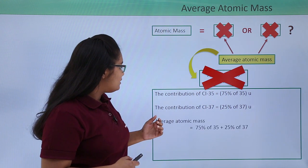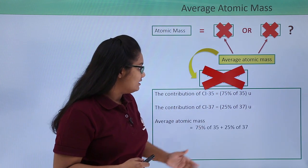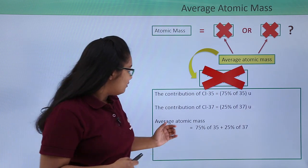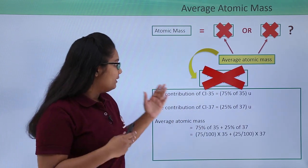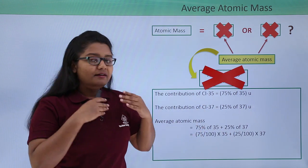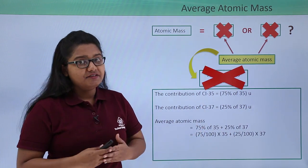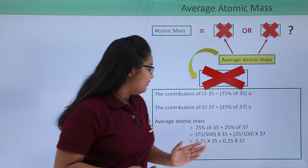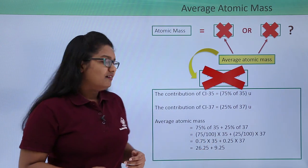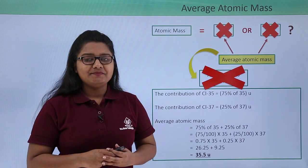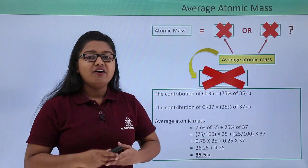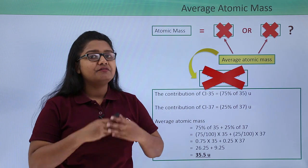We simply need to add these two contributions to get the answer. So this equals 75/100 multiplied by 35 plus 25/100 multiplied by 37, which ultimately yields the answer as 35.5 u, which is the average mass or the average atomic mass of chlorine.